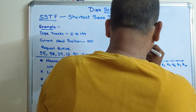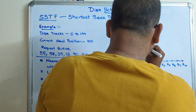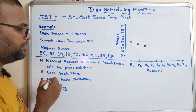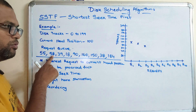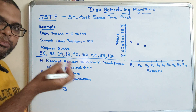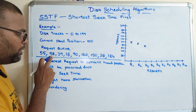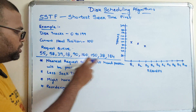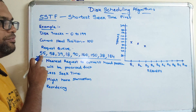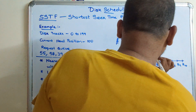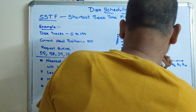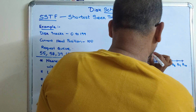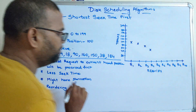Request 3: the head position moves towards 58. Now, the nearest position to 58 is 55, so request 4 is at 55.